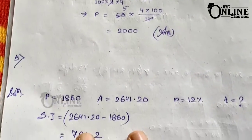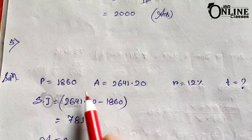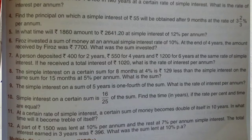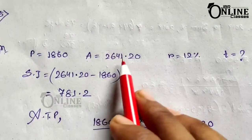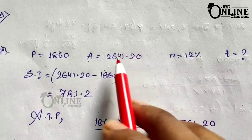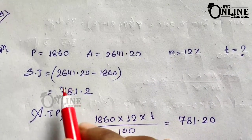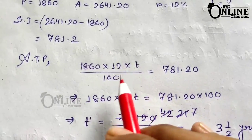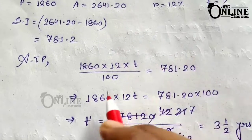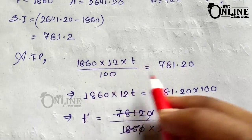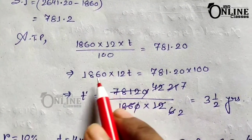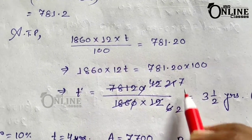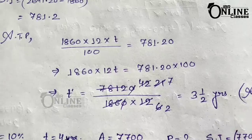Sum number 5: In what time will 1860 amount to 2641? Rate equals 12%. First find the simple interest: amount minus principal equals 2641.20 minus 1860 equals 781.20. Using PRT by 100 equals SI: 1860 into 12 into T divided by 100 equals 781.20, so multiplying gives 78120. Then 78120 divided by 1860 into 12 gives T equals 7/2 years, that is 3 and 1/2 years. That is the final answer.